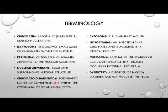Some of the terminology we're going to use throughout this series includes chromatin, which is basophilic or bluish-purplish stained nuclear DNA. Karyosome, also sometimes called an endosome, is a small mass of chromatin within the nucleus. Peripheral chromatin is chromatin adhering to the nuclear membrane. The nuclear membrane itself is the membrane surrounding the nuclear structure. Chromatoid bars, or chromatoid body, is a rod-shaped body of condensed RNA within the cytoplasm of some amoebic cysts.